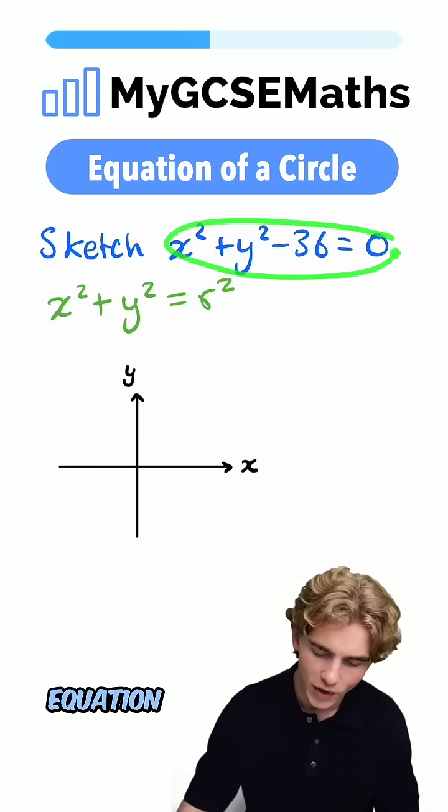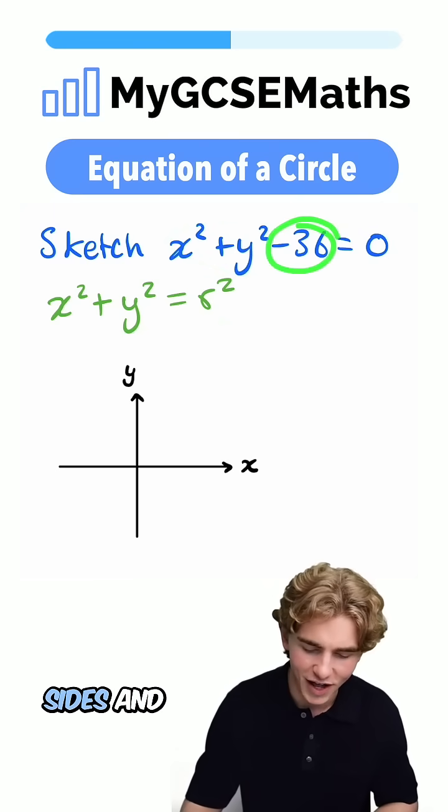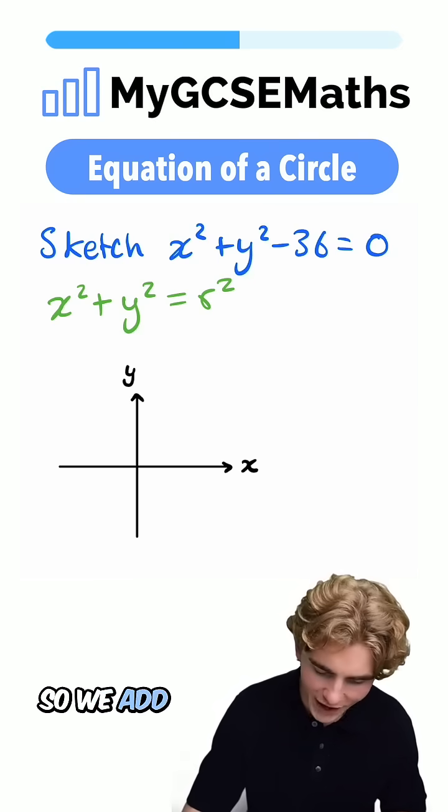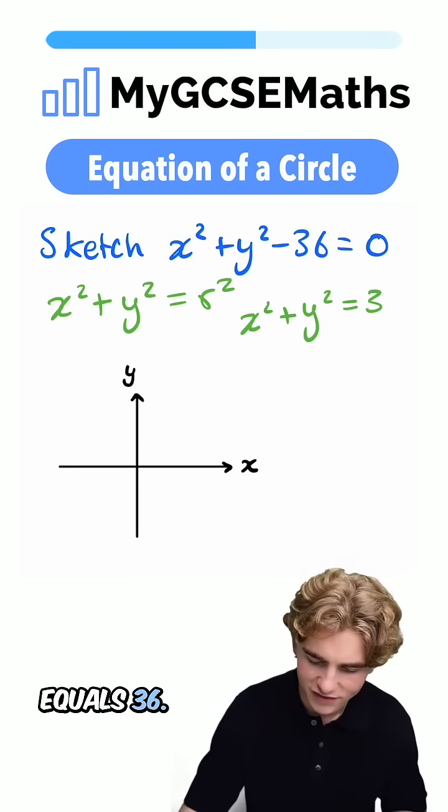We can see in this equation that we don't have x² + y² = r², but we could add 36 to both sides to get it in that form. So we add 36 to both sides, we get x² + y² = 36.